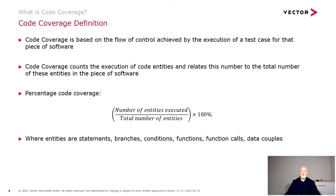Code coverage is based on the flow of control achieved by execution of a test case for a piece of software, and this counts the number of code entities and relates this to the total number of entities in the software. As a formula: percentage of code coverage equals the number of entities executed divided by the total number of those entities, times 100%. The entities are things we can cover like statements, branches, conditions, functions, function calls, and data and control couples.